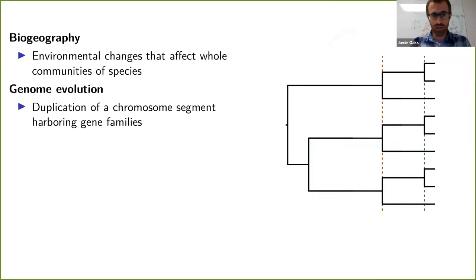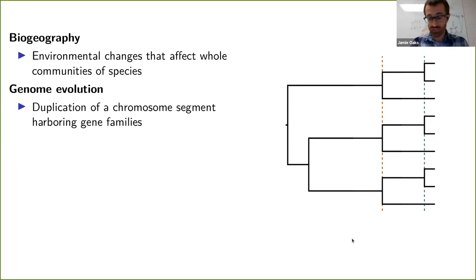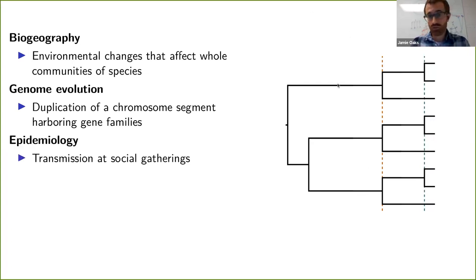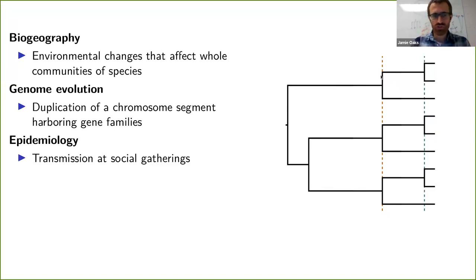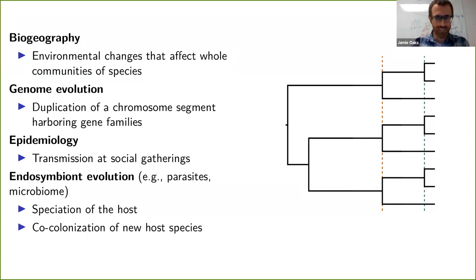But there are other processes as well. Instead of lizards on islands, we can imagine three members of a gene family on a region of a chromosome that gets duplicated — that will also cause a pattern of shared divergences. We can also imagine three individuals carrying a pathogen that they bring to a social gathering and spread to other individuals, creating a shared divergence pattern in the phylogenetic history of the pathogens. More generally, whenever we have organisms living inside other organisms, we have opportunities to create these shared divergences across the tree of life.